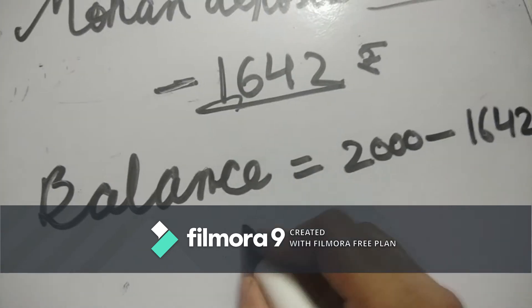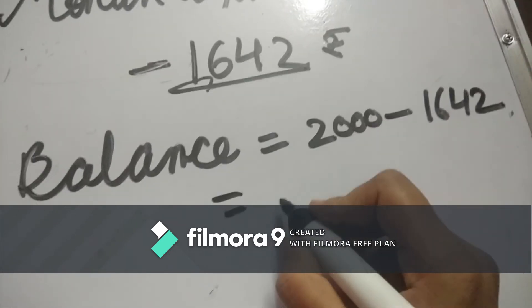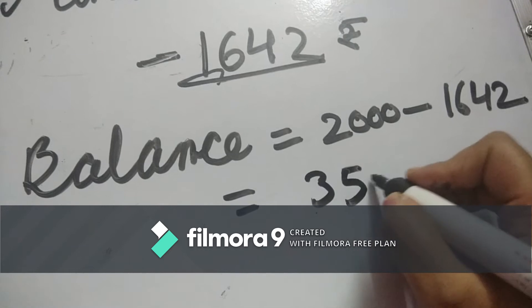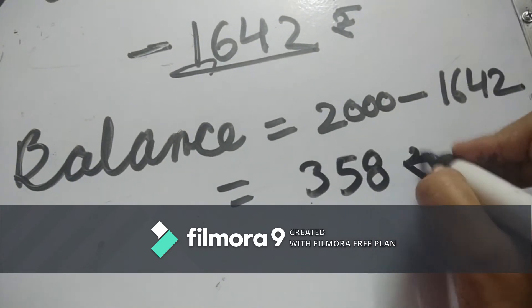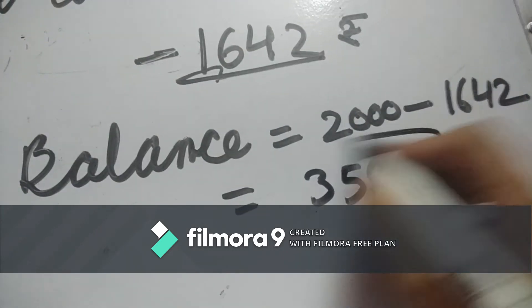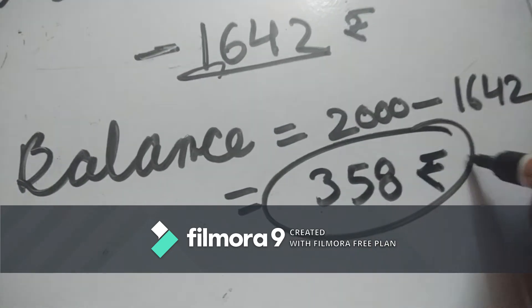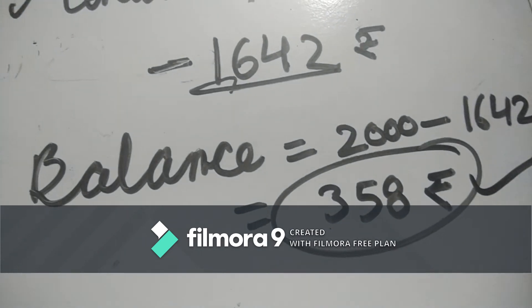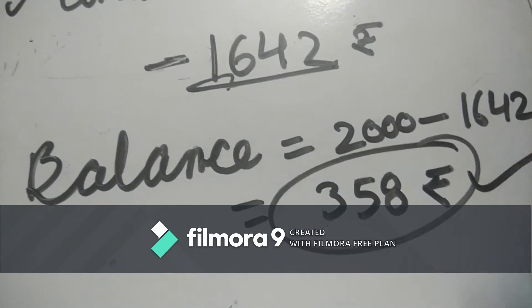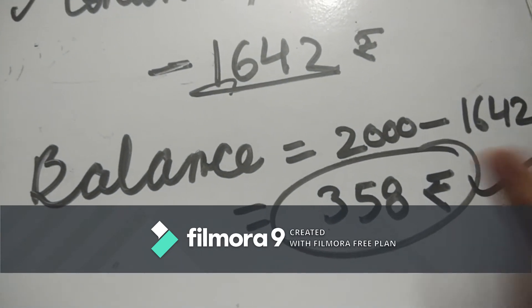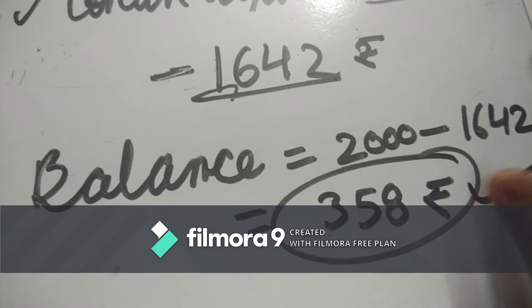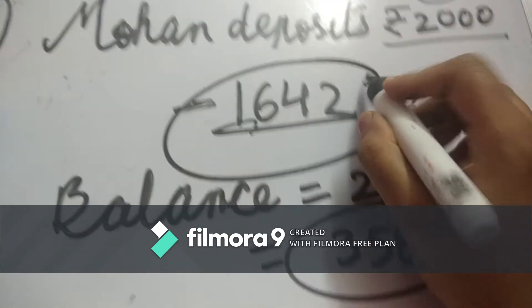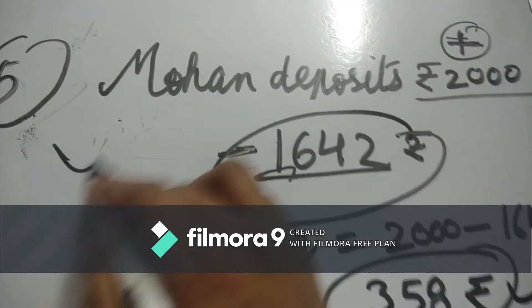So here, 358 rupees will remain in the account. Three hundred and fifty-eight rupees is the remaining balance after the withdrawal.